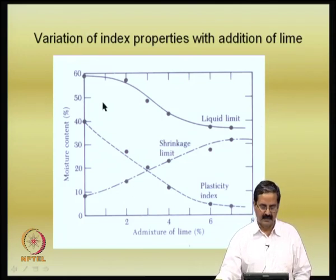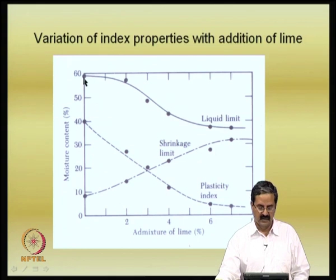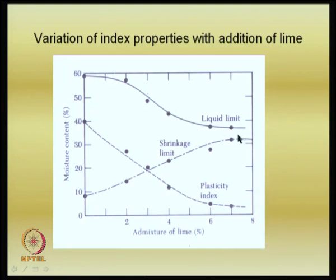This is a typical example of how the mixture of lime with soil changes the plastic characteristics. For example, if the liquid limit is about 60 percent, with addition of 2, 4, 6, and 8 percent lime, the liquid limit comes down from 60 to 40 percent. The plasticity index has come down from 42 to about 5 percent — a very good difference. The shrinkage limit is increasing.